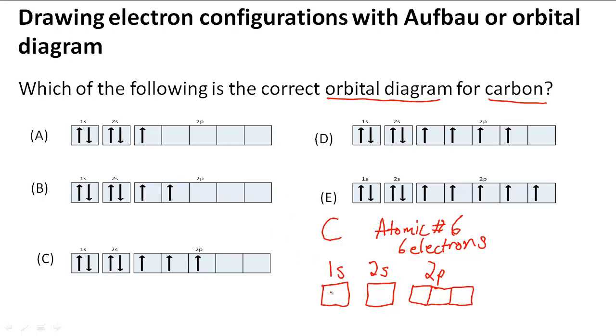So what we have to do first is put in our first electron. We draw the arrow to represent an electron and I'm pointing it in one direction meaning that it's spinning in one direction. It's spinning in a direction. It doesn't mean it's spinning up, it just means that it's spinning in a direction. And then the next thing I have to do following the Aufbau principle, I can't jump to 2s. I have to stay in 1s and fill that up first before I move on to the next energy level.